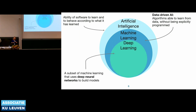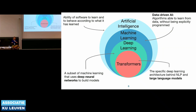Deep learning is a subset of machine learning using special techniques with very interesting properties. Transformers are a subset of deep learning that powers NLP and large language models. Pretty much whenever we talk about machine learning and its limitations, most of that applies down to deep learning and large language models as well.